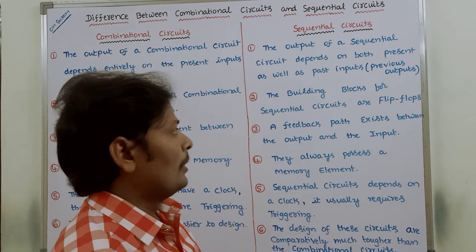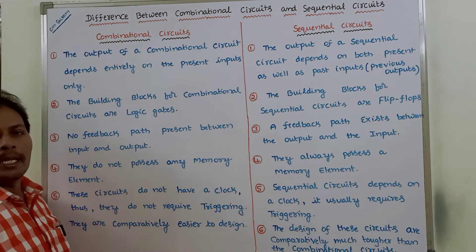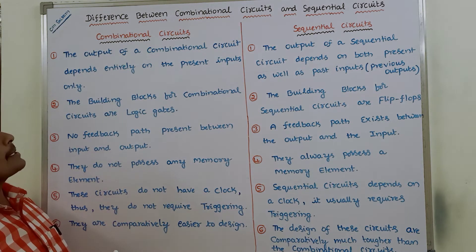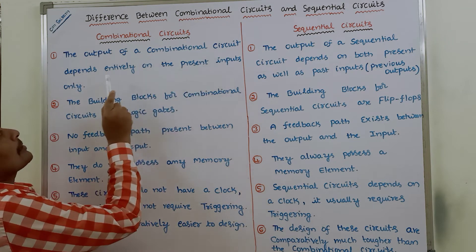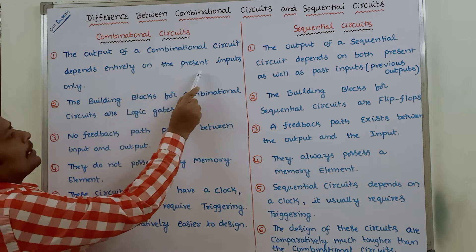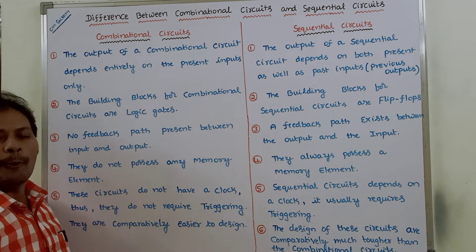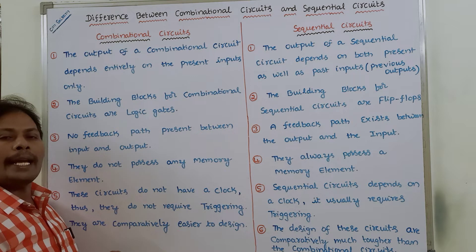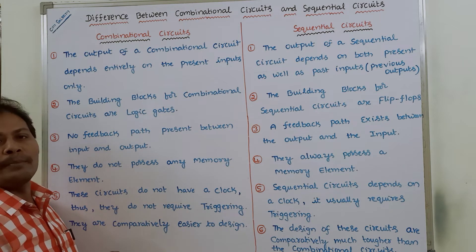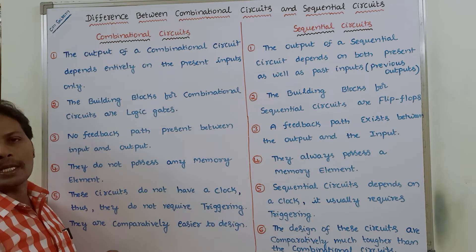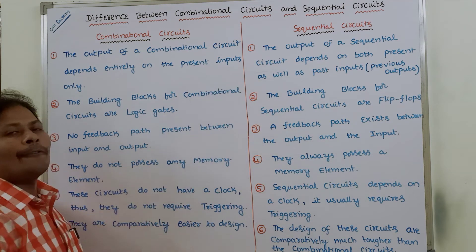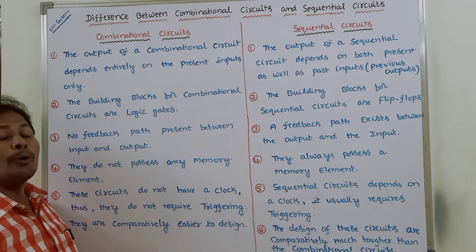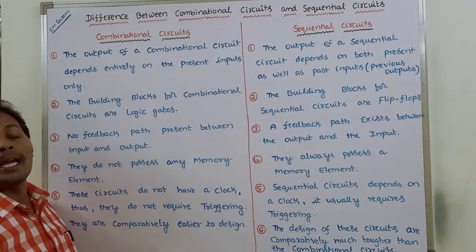The first point: in the case of a combinational circuit, the output depends entirely on the present inputs only. That means at any instant of time, the output of a combinational circuit depends only on the present inputs.